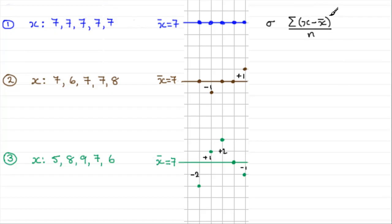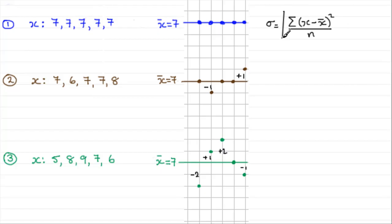To get around this problem, we square the deviations and total them. That way we don't get zero. We then work out the mean of the sum of squared deviations by dividing by n. Because we squared the deviations, we reverse the effect by taking the square root. This gives us the formula for standard deviation.